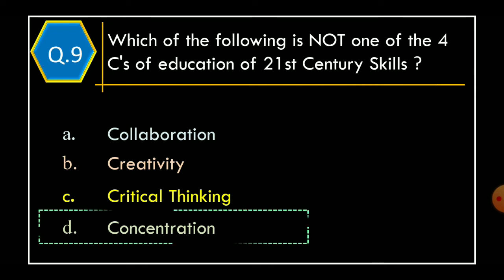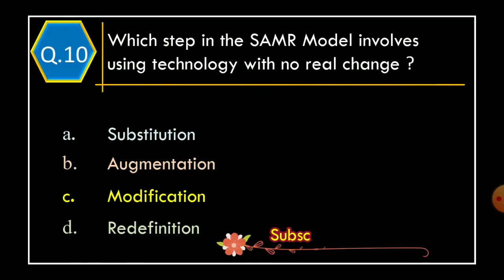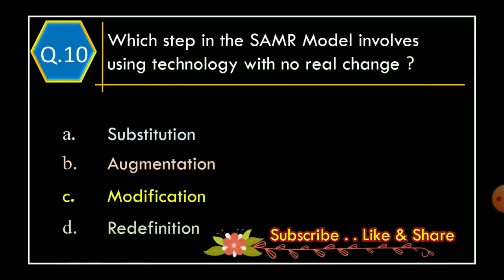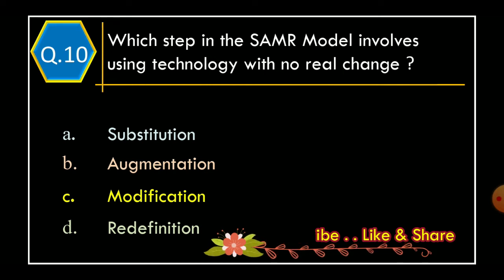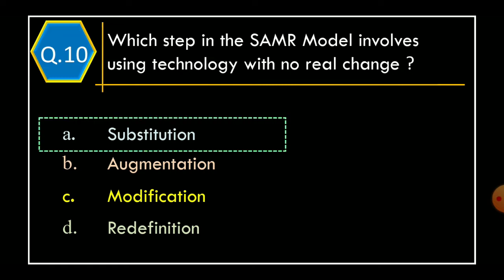Question 10: Which step in the SAMR model involves using technology with no real change? Option A: Substitution. Option B: Augmentation. Option C: Modification. Option D: Redefinition. And the correct option is Option A: Substitution.